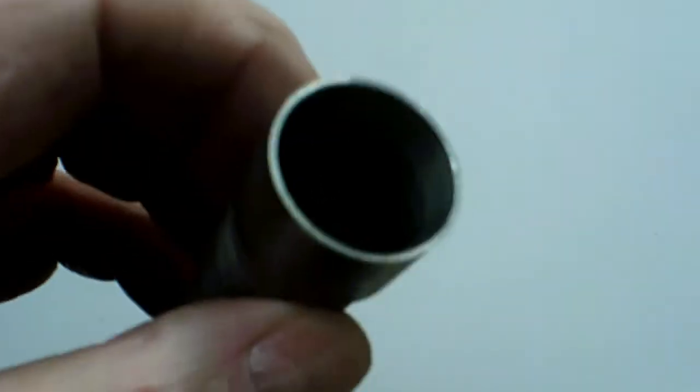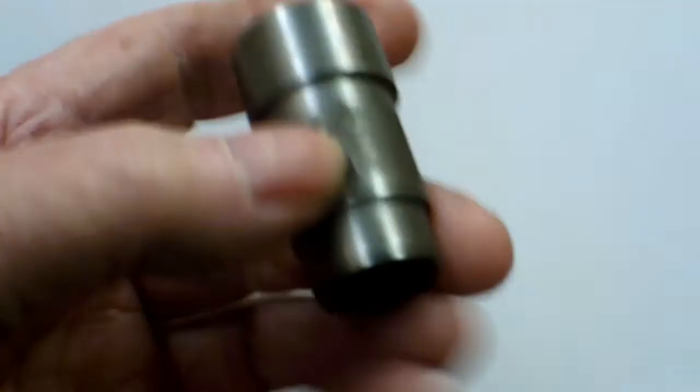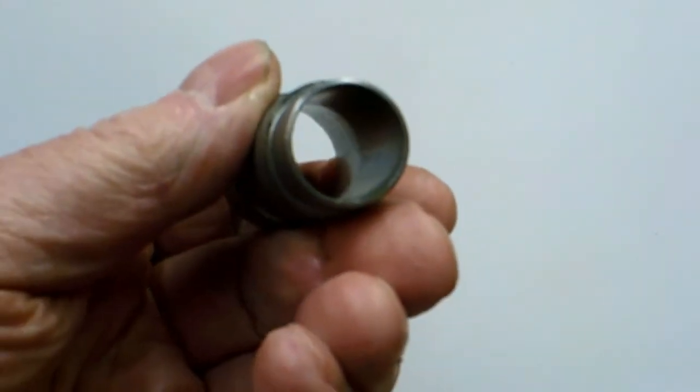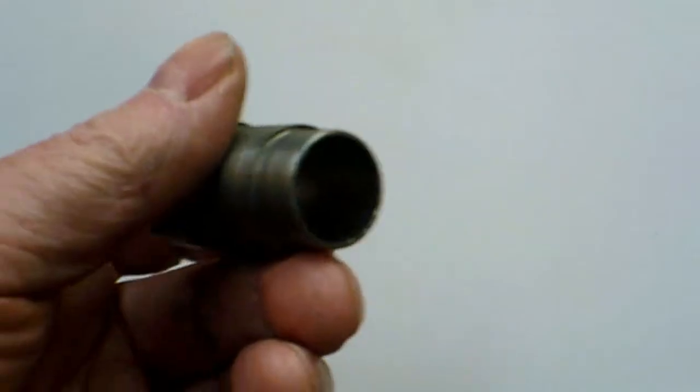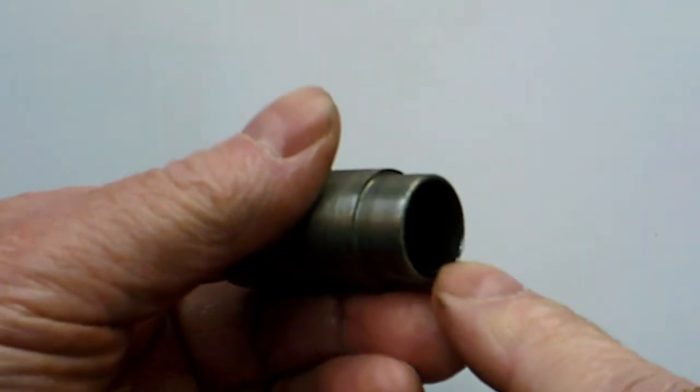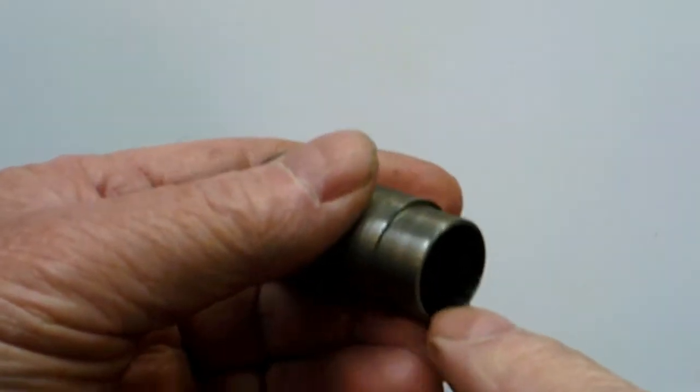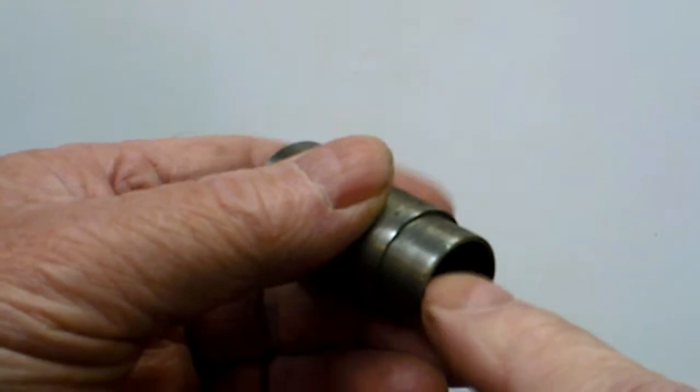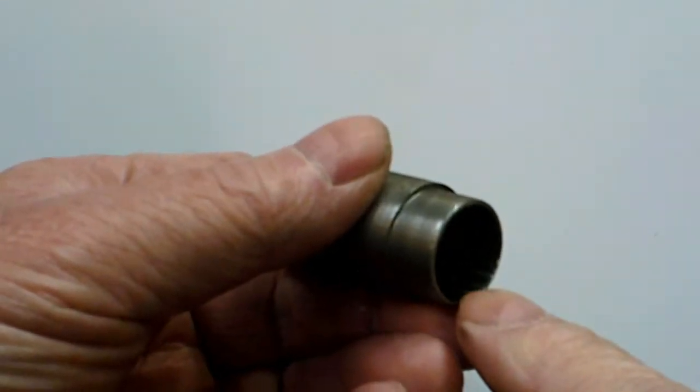I thought I'd show you this tool that I use for putting in snap rings. The idea of this tube is it's bored just the same size as the wrist pin, maybe just a little bit smaller than the wrist pin.